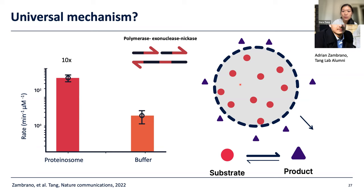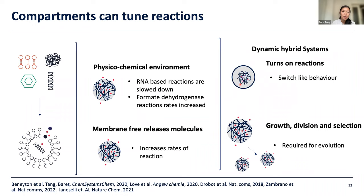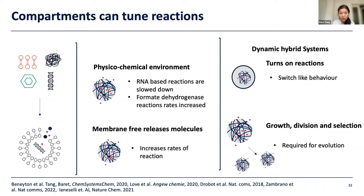So what I hope I've shown you is how we can use compartments with different physical properties to deconvolute how compartments can tune reactions. The physicochemical environment of membrane-free coacervates can both slow down and speed up reactions. We've also seen that if molecules can diffuse freely through a membrane, this can increase rates of reaction by relieving product inhibition in the compartment. We've also shown using our toolkit that we can generate dynamic behaviours within coacervates, switch behaviours on by generating a compartment in situ, and that these membrane-free compartments can grow, divide, and select — a nice collaboration with Dieter Braun's lab in Munich.